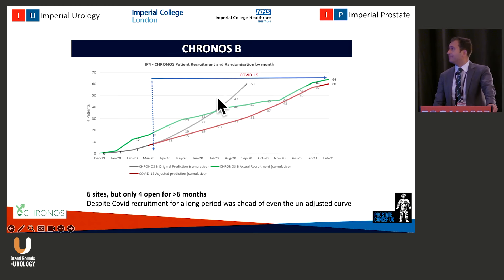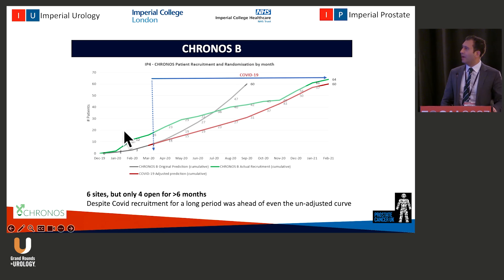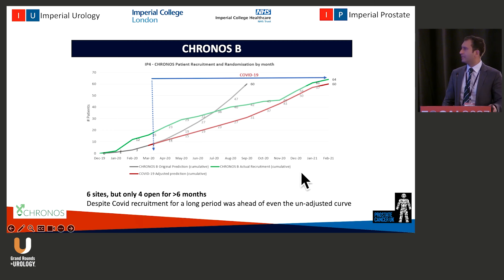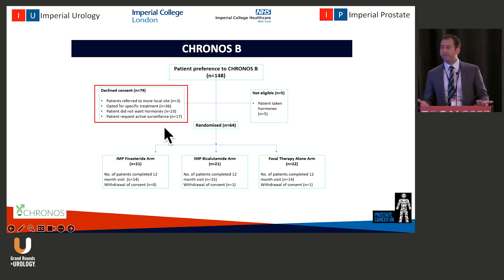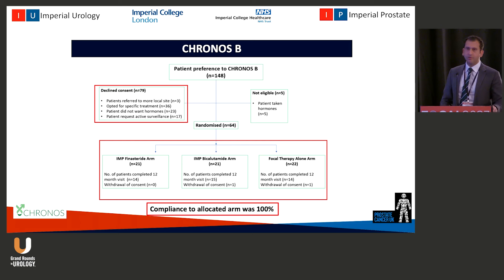Kronos-B — the neoadjuvant treatment study — was quite an easy study to recruit to. Patients were quite happy to have some neoadjuvant treatments. The green curve was well ahead of target before COVID hit. Despite a serious impact on services, we eventually met our target with only four sites open for over six months. Almost all patients accepted it. Some did decline because they wanted to choose their treatment or didn't want hormonal side effects. But no one refused their treatment after randomization.